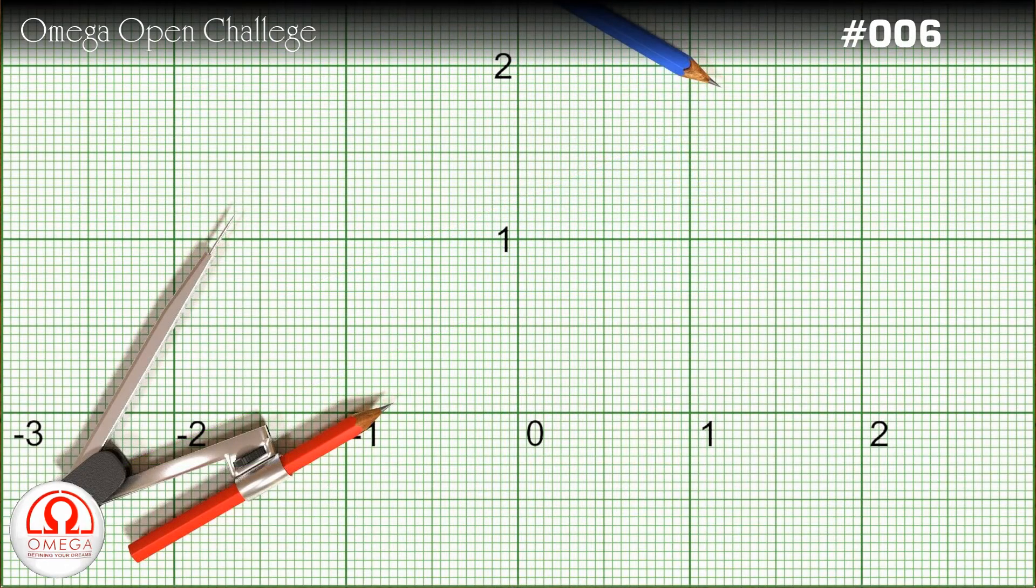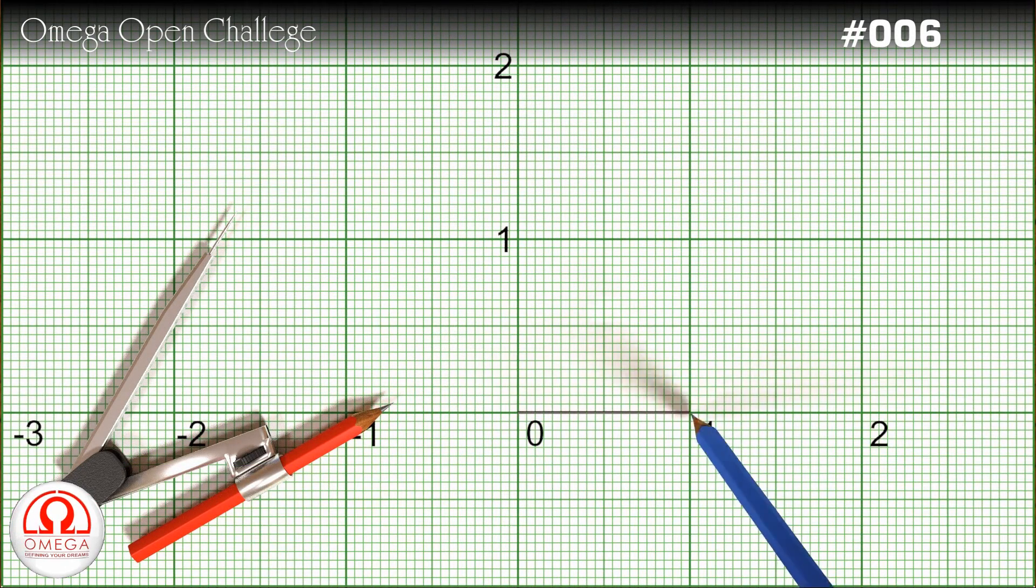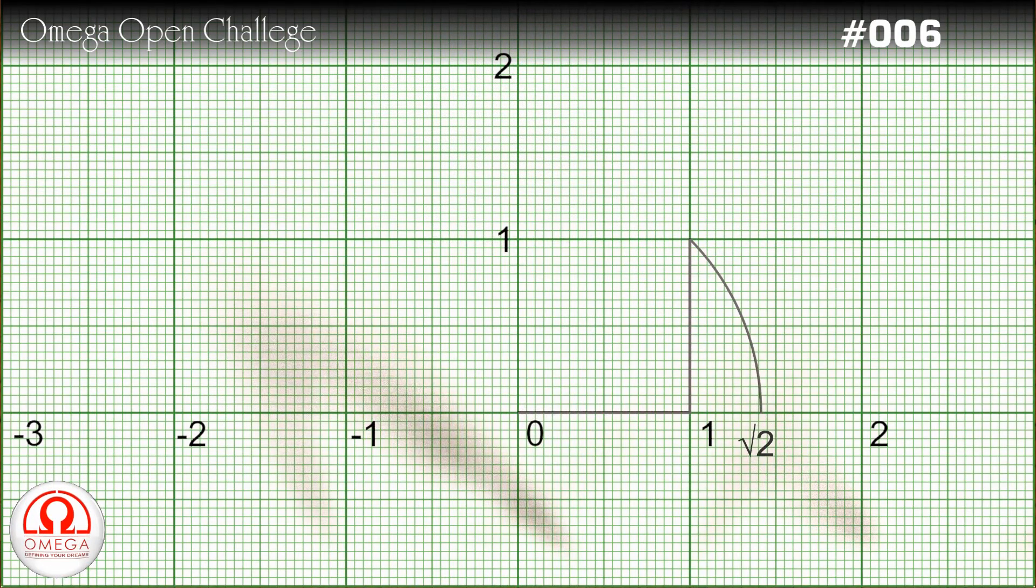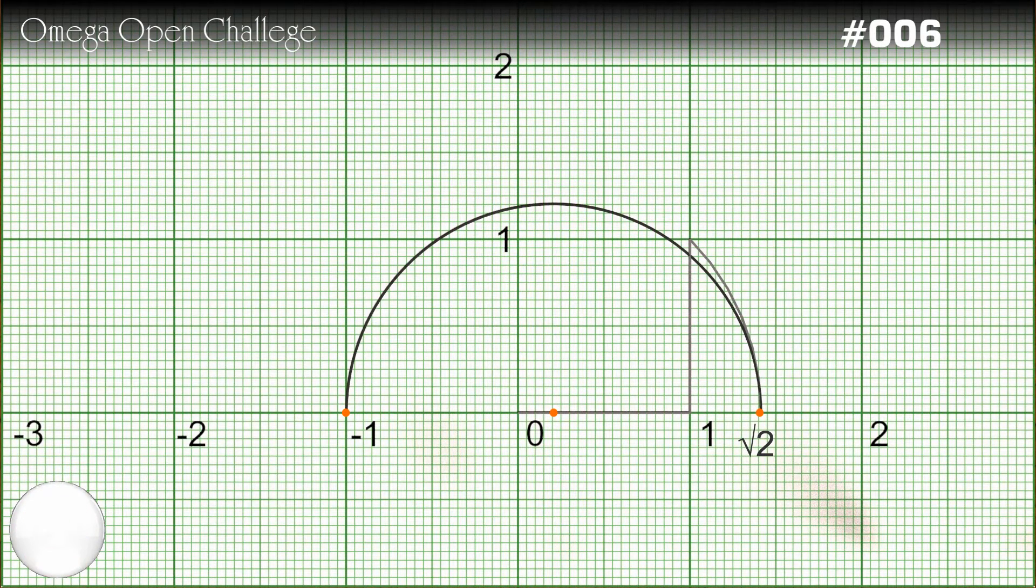Now let's do the construction. We can easily locate the square root of 2 on the number line. Find the midpoint of square root of 2 and minus 1. With this midpoint as center, draw a semicircle passing through root 2.